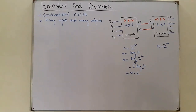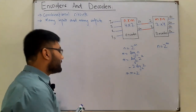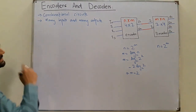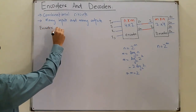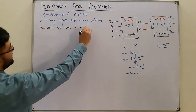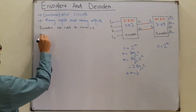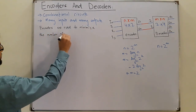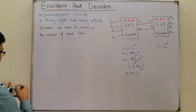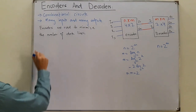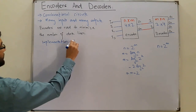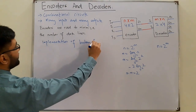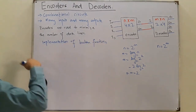What is the use of encoders and decoders? Encoders are used primarily to minimize the number of data lines — that is their most significant use. A second use is to help implement Boolean functions. We will see that second use in upcoming lectures and focus on the first one now.